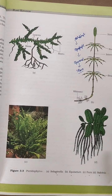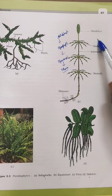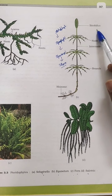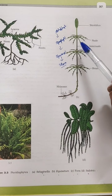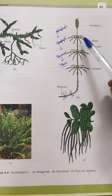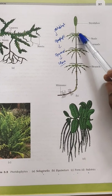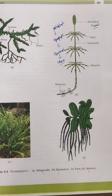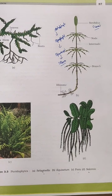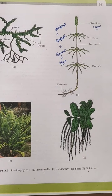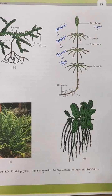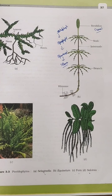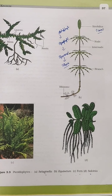Another structure present in some pteridophytes is the strobilus. Strobili are cone-like distinct structures formed by the sporophylls. The sporophylls join together to form a compact leaf structure, and that structure is known as the strobilus or cone. These strobili are present in some pteridophytes, not in all. Examples of plants in which we find strobili are Equisetum and Selaginella.